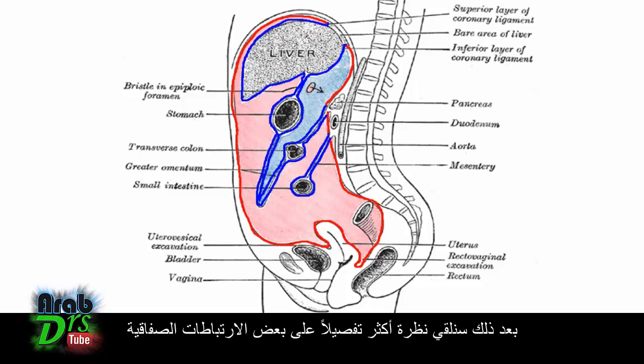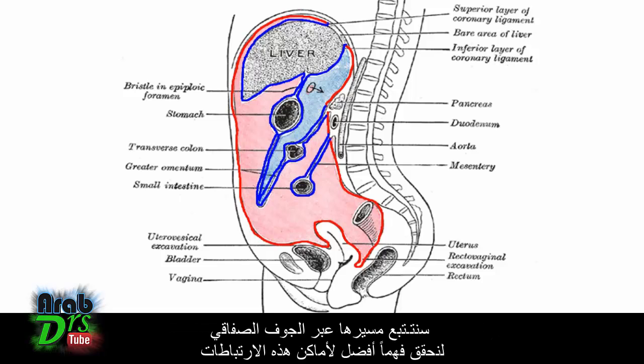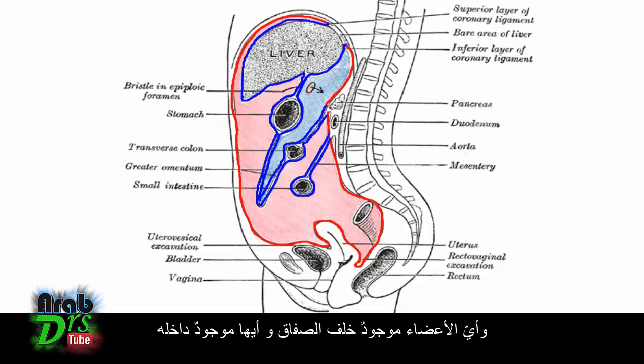Next we'll take a look in more detail at some of the peritoneal attachments and trace their path through the peritoneal cavity, to get a better understanding of where these attachments are and which organs are retroperitoneal versus intraperitoneal.